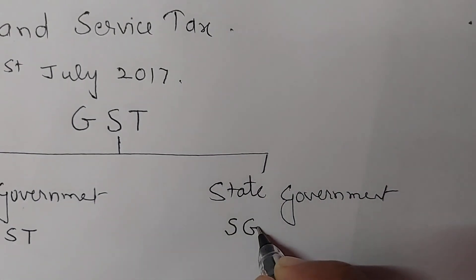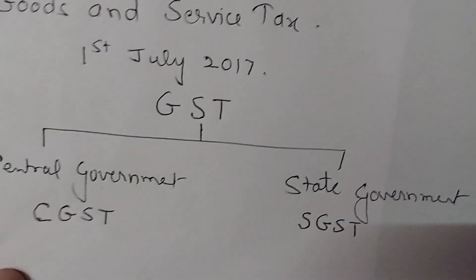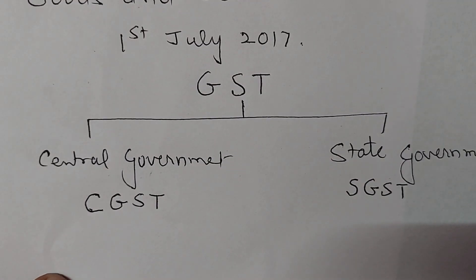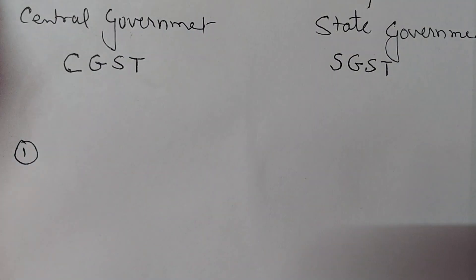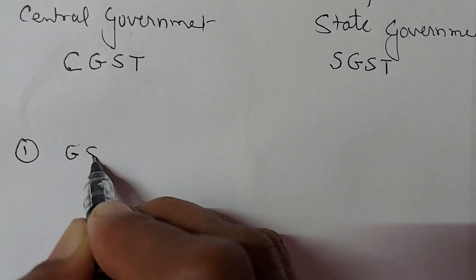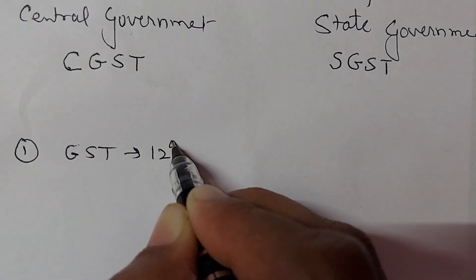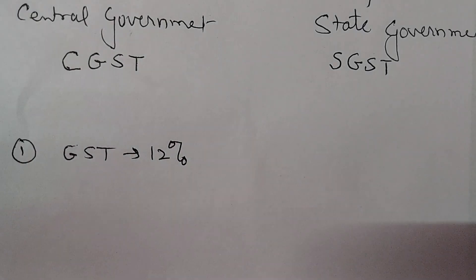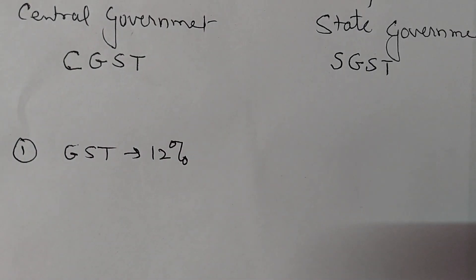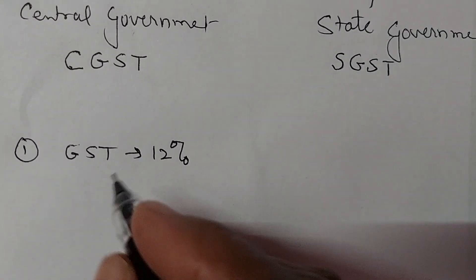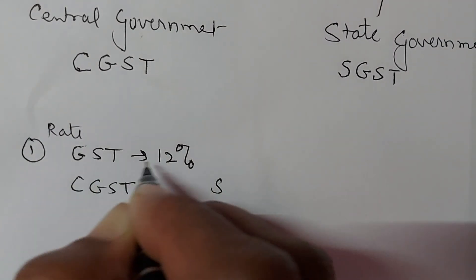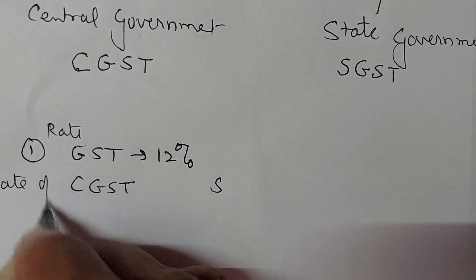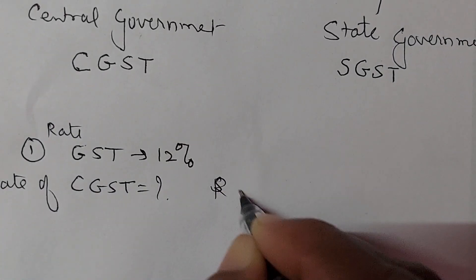The government tax is CGST — Central GST — and the government tax is SGST — State GST. For example, if the rate of GST is 12%, I will tell you the rate of CGST and the rate of SGST.